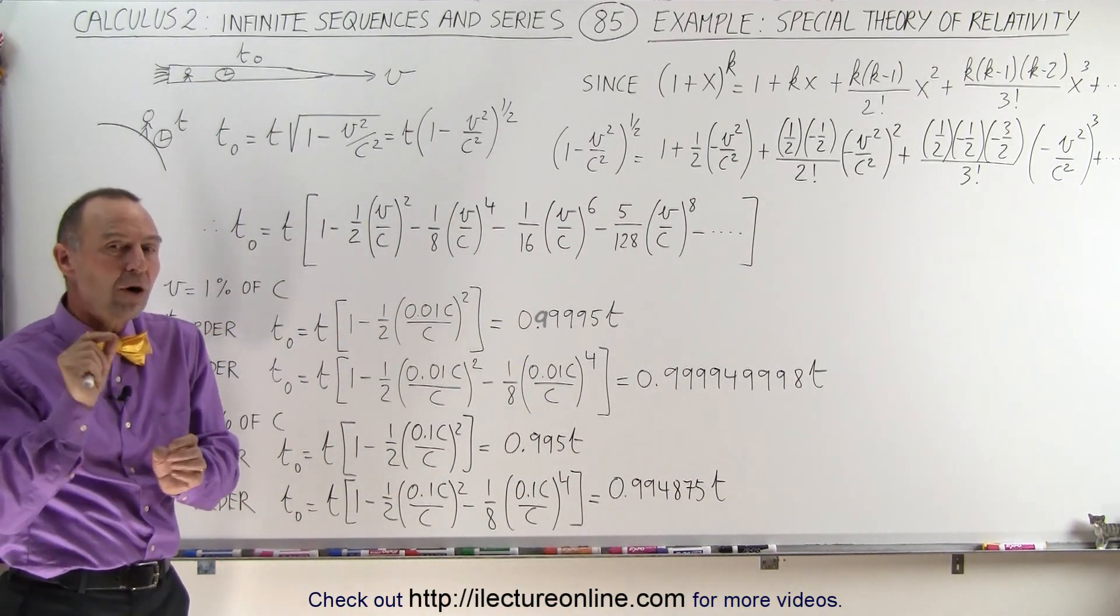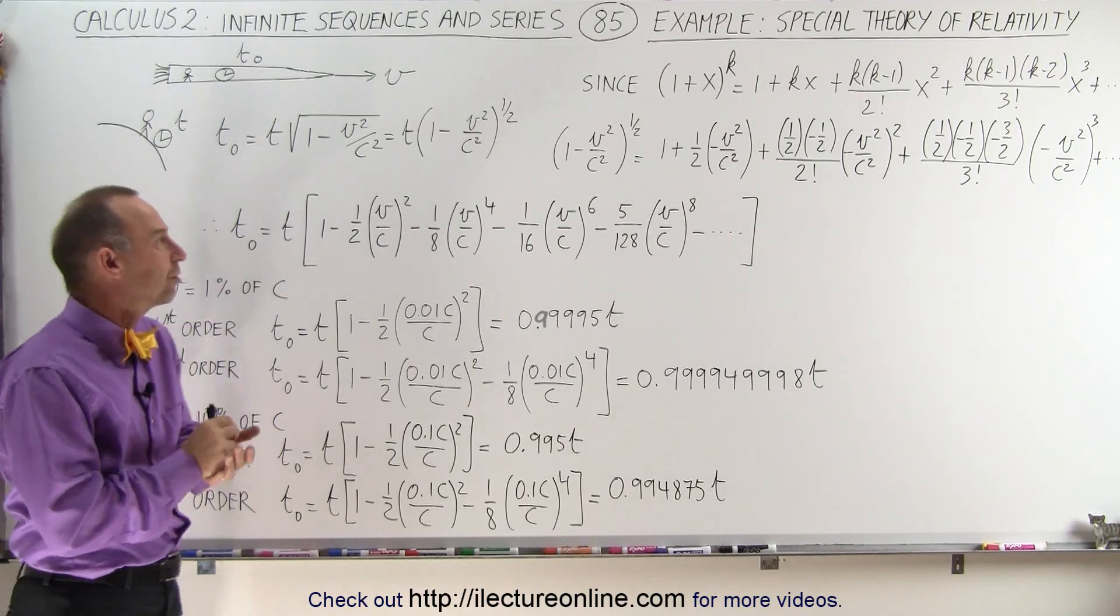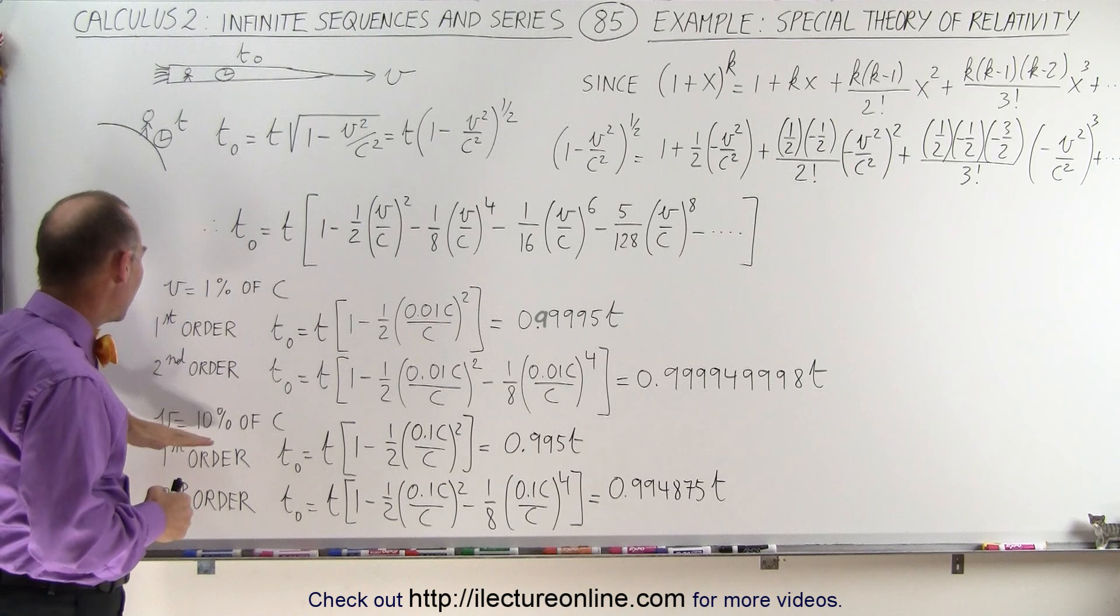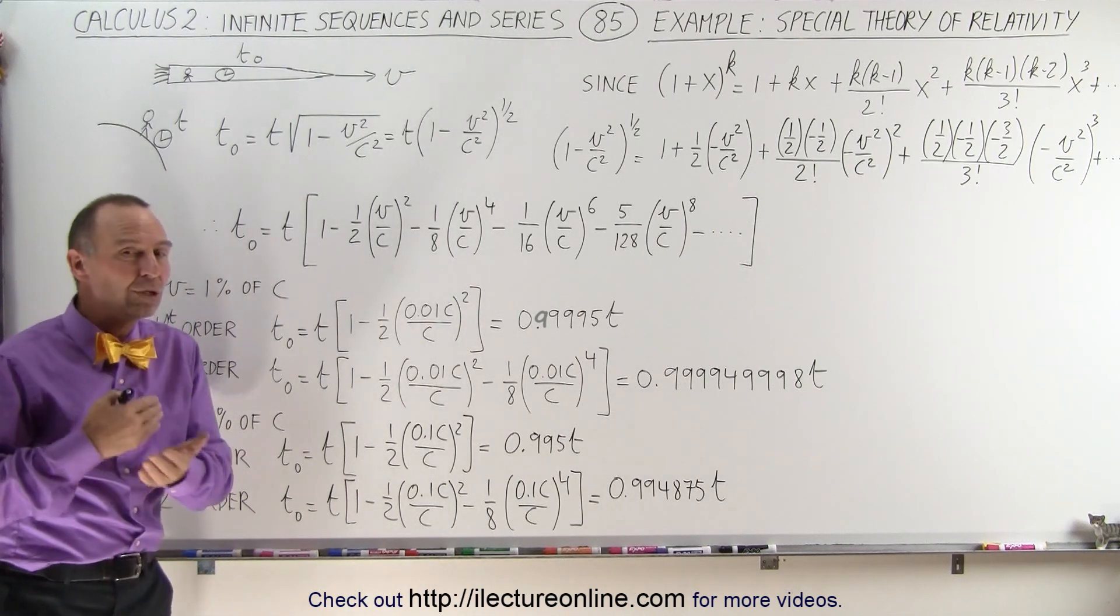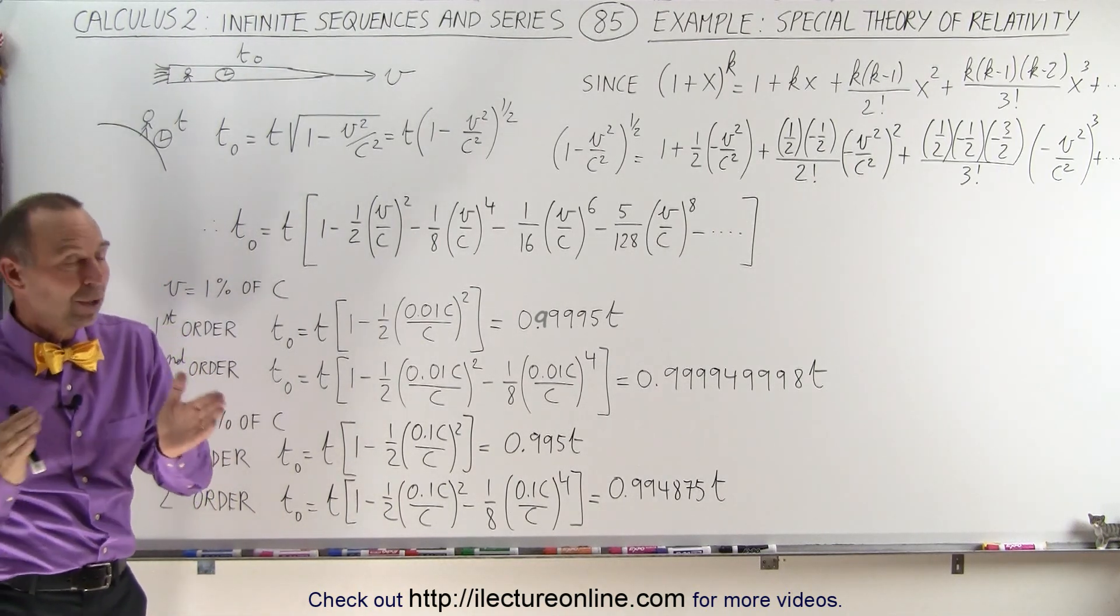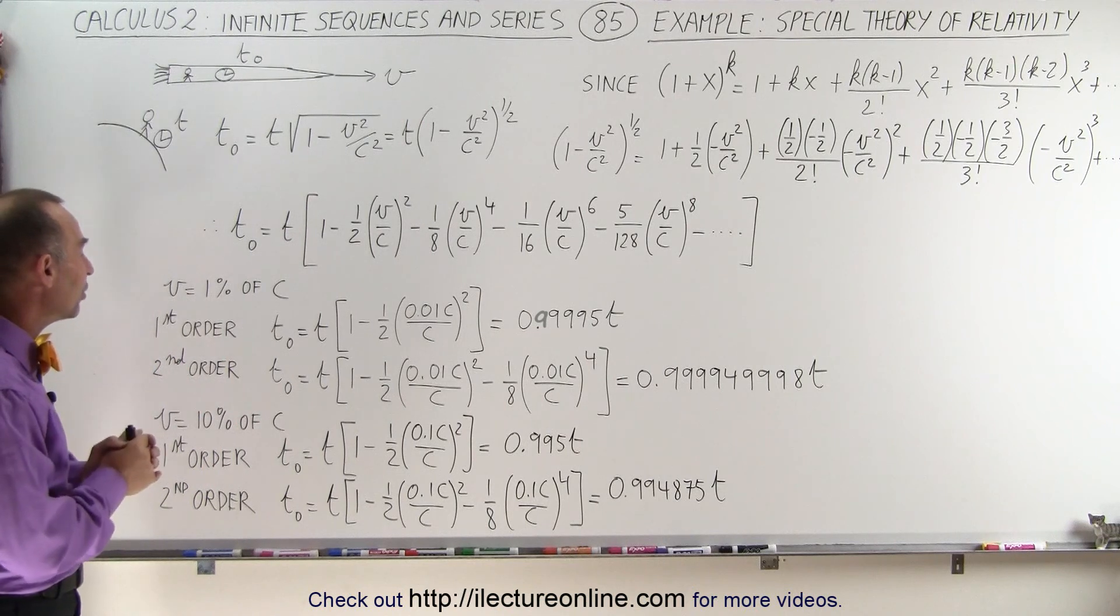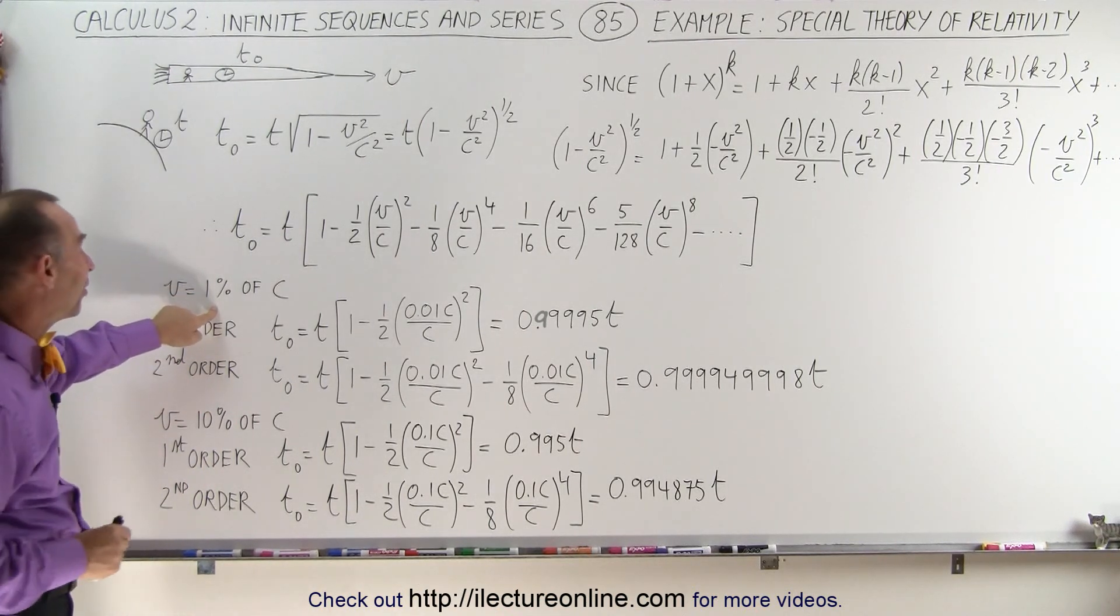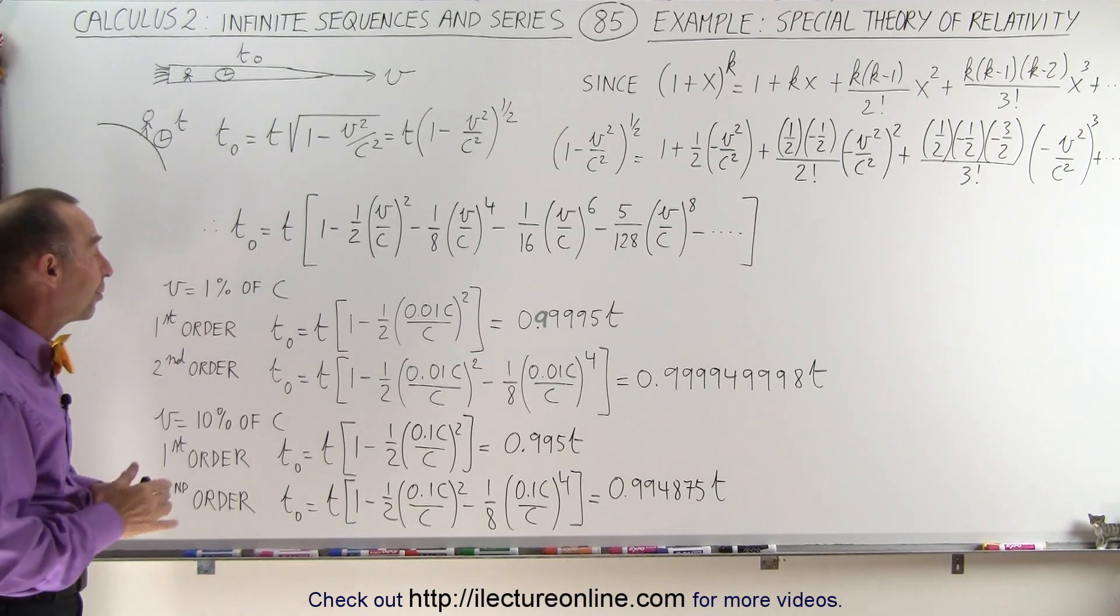But it turns out for relatively small values of v, let's say if v is only one percent the speed of light, or if v is 10 percent of speed of light, we do not need that many terms to come up with a pretty good estimate of that value. Matter of fact, satellites travel way slower than one percent the speed of light, so it definitely works for them as well.